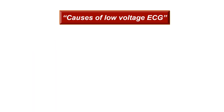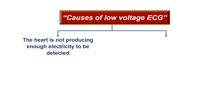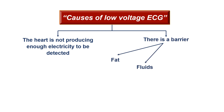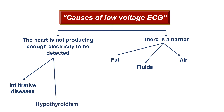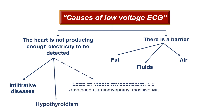Let's summarize the causes of low voltage ECGs. Either the heart is not producing enough electricity to be detected — due to infiltration to the heart, myxedema and hypothyroidism, or loss of viable myocardium like with advanced cardiomyopathy and massive MI. Or there is a barrier — fat, fluids, or air. This slide summarizes most of the causes of low voltage ECG.